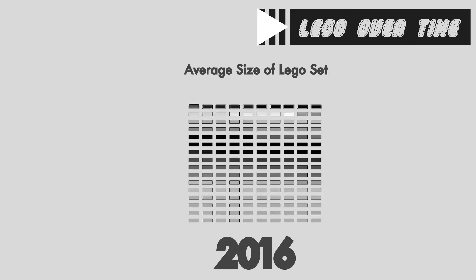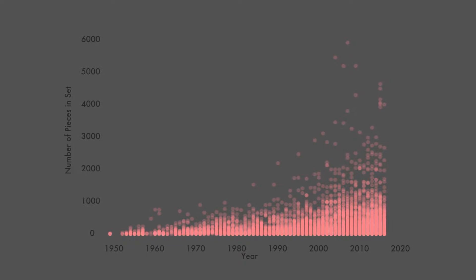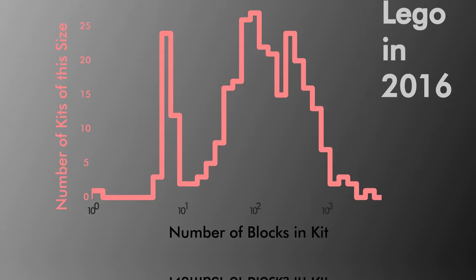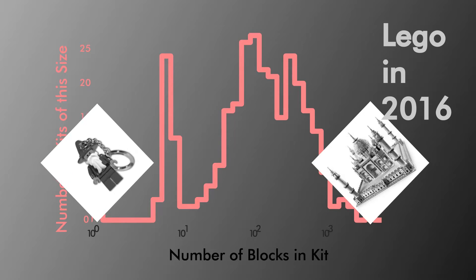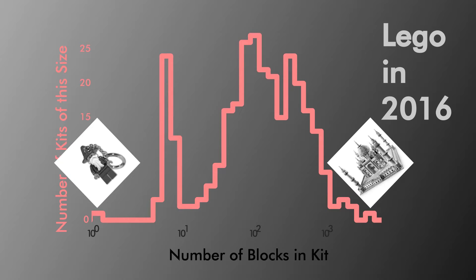But more than that, it's not just the size of the kits but their complexity and variety that's changed over time. Before we look at how LEGO kits have evolved over time, maybe we just want to see what they look like at one time point. In 2016, we see a surprising degree of diversity — from one-piece LEGO keychains to a 6,000-piece Taj Mahal kit — with the majority having around 100 pieces.